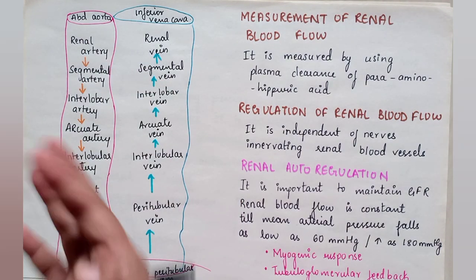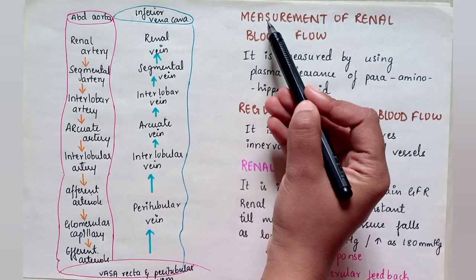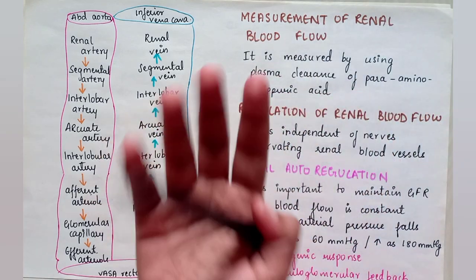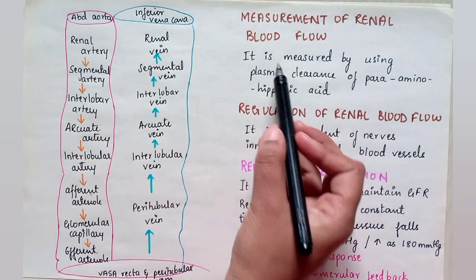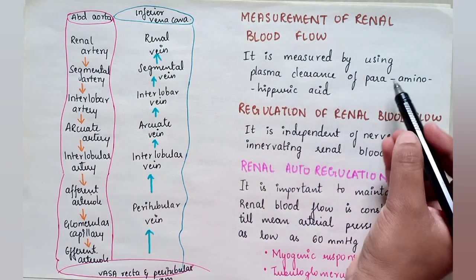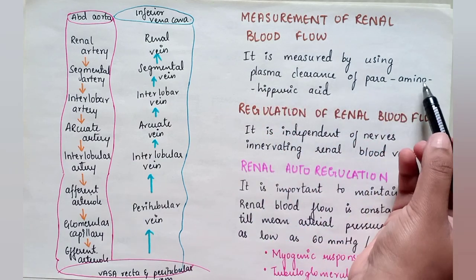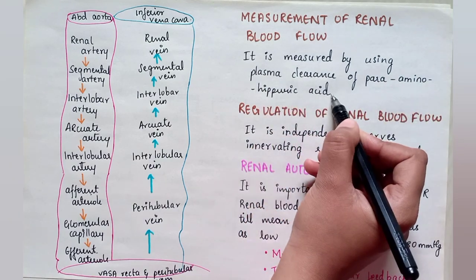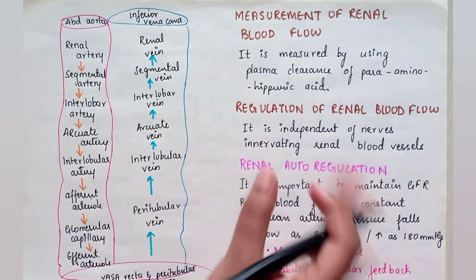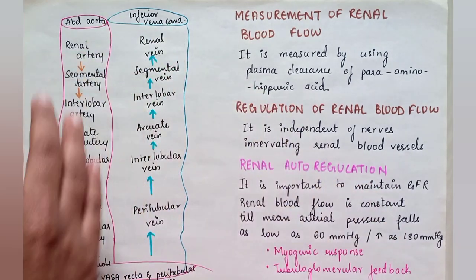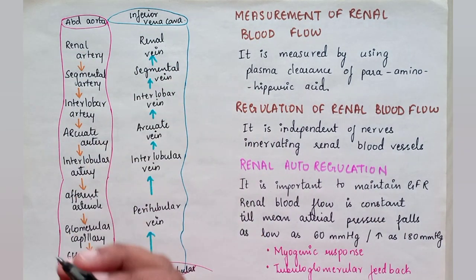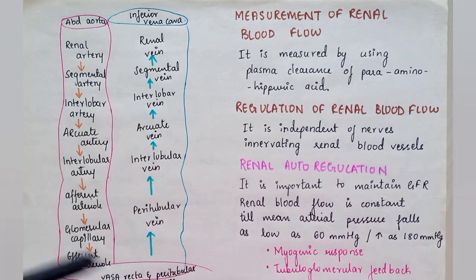How is this all measured? Measurement of renal blood flow is done by using plasma clearance of para-aminohippuric acid. The para-aminohippuric acid is injected and it is observed how long it takes to get cleared from the blood.